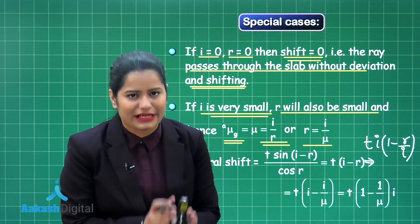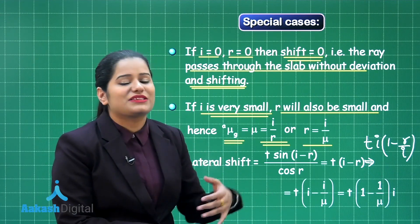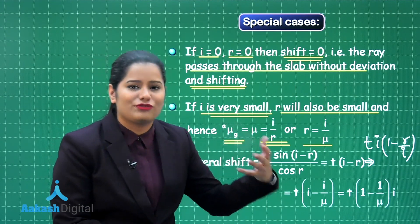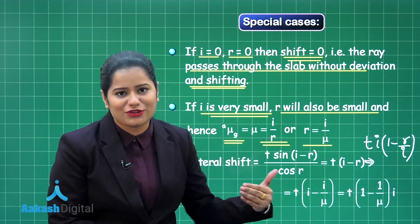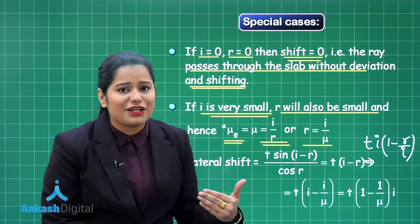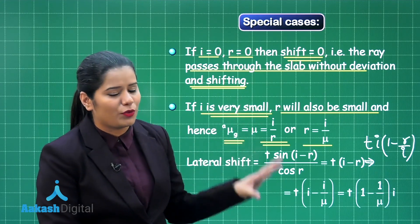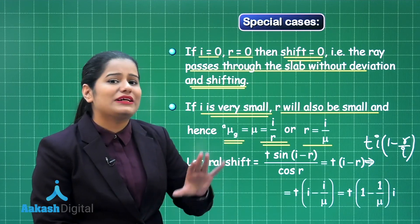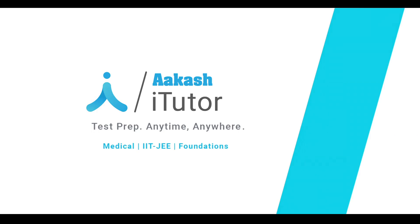In this segment, I have explained the bending of light rays and the refraction of light through a rectangular glass slab, derived the general formula for lateral displacement, and discussed its special cases. These topics are very important from the examination point of view. In the next segment, we will discuss apparent depth.